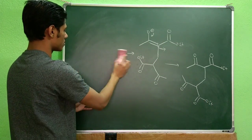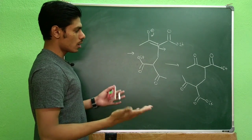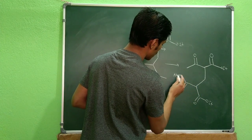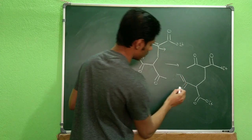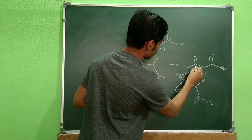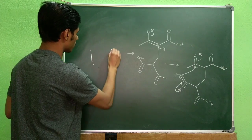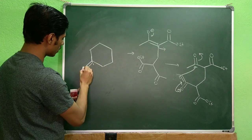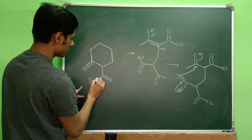Now what next can happen: you have the ethoxide anion in your reaction, and that ethoxide anion can easily take a proton from there, which will basically produce an enolate. So the ethoxide takes a proton, producing this enolate. Now when this enolate pushes back, it will attack intramolecularly to give you a cyclized product. You can see this cyclized product, where here you will have the carbonyl group.